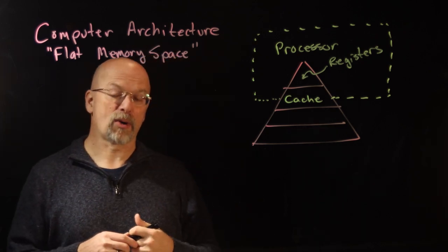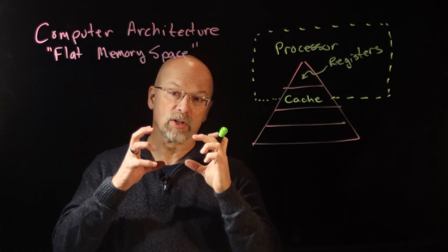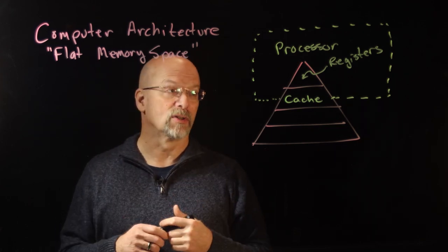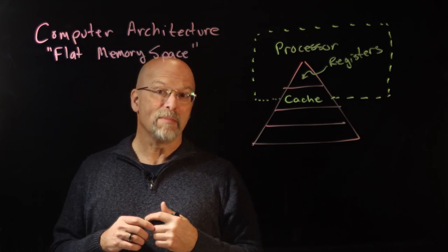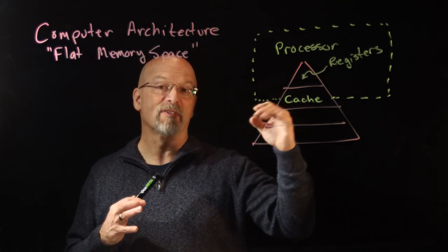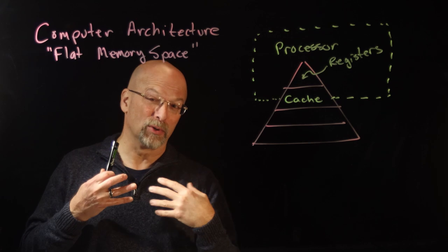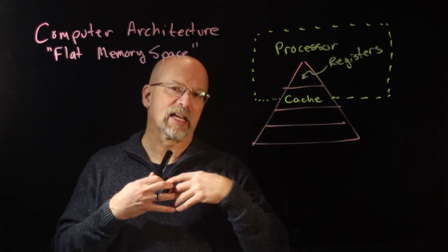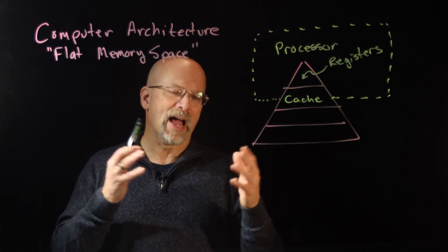A lot of the times the processor itself contains some of the cache. There may actually be some cache that is just outside the processor. For example, if I've got a multi-core system, each one has its own really close-by caches, and then everybody shares a cache that's a little larger but a little further out.